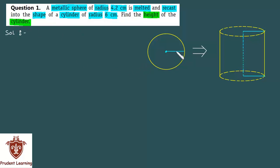In this question, we are given a metallic sphere of radius 4.2 cm which is melted and transformed into the shape of a cylinder whose radius is 6 cm, and we are required to find the height of the cylinder.